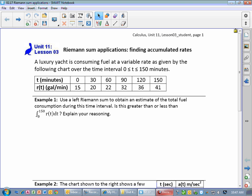So notice we have a luxury yacht consuming fuel at a variable rate given by this chart. At time zero, we're using exactly 15 gallons per minute. At 30 minutes, we're using 20 gallons per minute. At 60 minutes, we're using 22. At 90 minutes, 32. At 120, 36. And at 150, 41. So what's happening to our fuel consumption rate over time? The fuel consumption rate, R(t), is increasing over this time interval, right? So at this instant, we're using 41 gallons per minute.